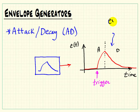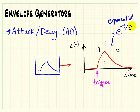Commonly the envelope is created using an exponential, and exponentials from a mathematical standpoint look like e raised to the minus t over tau. Exponentials are also very easy to make with resistor-capacitor-type circuits, or RC circuits. Therefore this style of envelope is fairly easy to make with analog electronics.